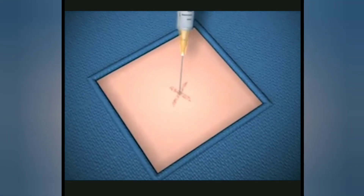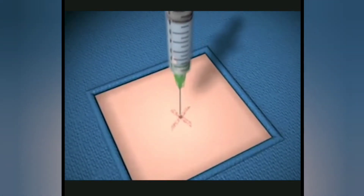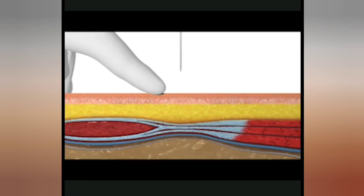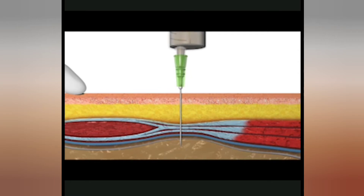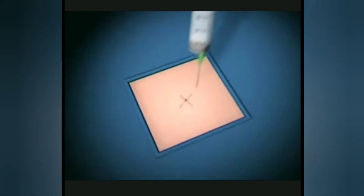Infiltrate local anaesthetic into the skin and subcutaneous tissue with a 25 gauge needle, and into the deeper tissues with a 21 gauge needle. For both ascitic tap and ascitic drain procedures, the Z-track technique may be used. With a non-dominant hand, stretch the skin slightly around the injection site to displace the underlying subcutaneous tissue. When the skin relaxes back into position after the needle has been removed, the ascitic fluid is less likely to backtrack up through the superficial layers because of the so-called Z-track that is formed when this technique is carried out.